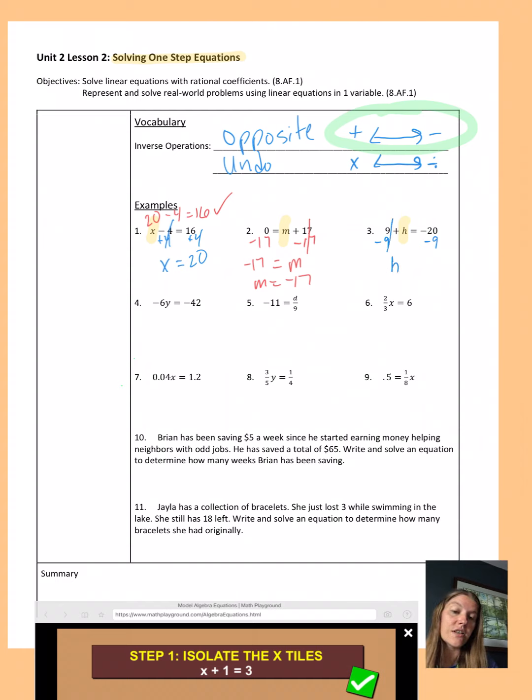9 and negative 9 make 0. So we just have an 8 left on this side. And then remember integer rules. We've got negative 20 and a negative 9 makes negative 29.